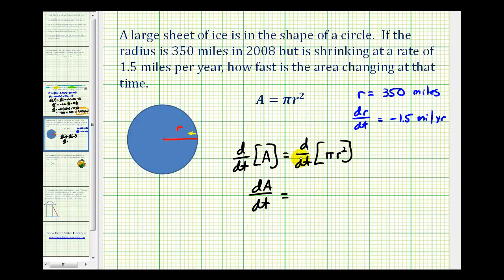And on the right side, we're going to differentiate πr² with respect to t. Well, π is a constant, so the derivative of πr² with respect to t would be 2 times π times r times dr/dt. Again, we have to apply the chain rule because we're differentiating with respect to t.